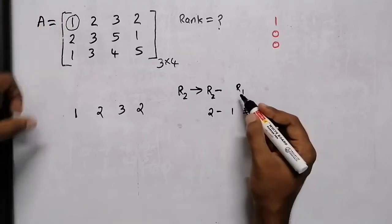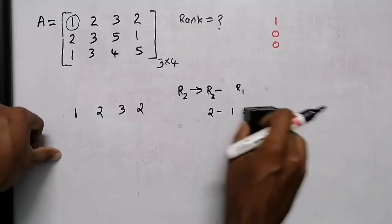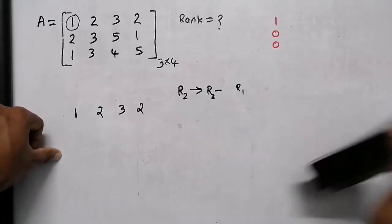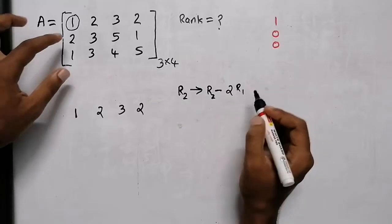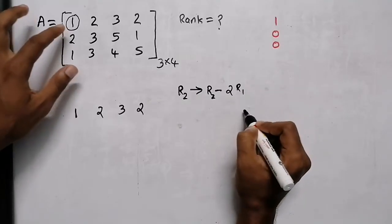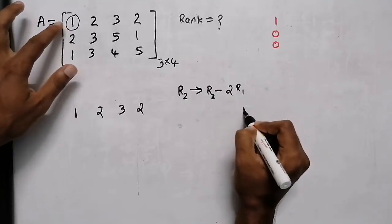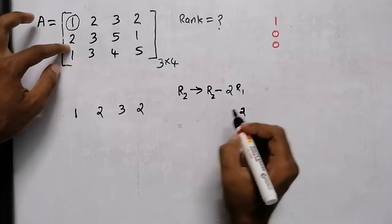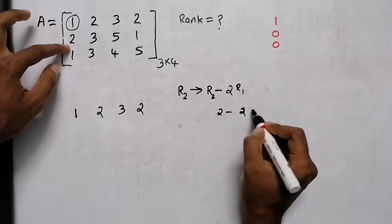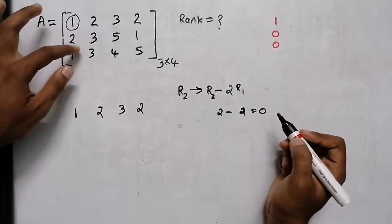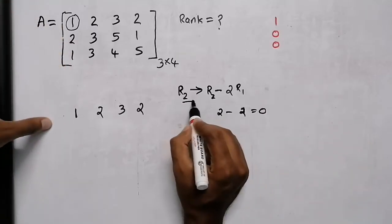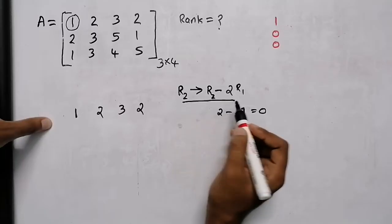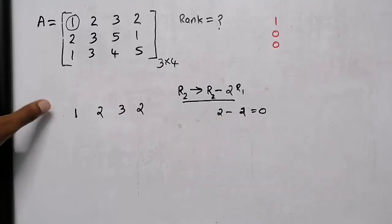I will do a second row: R2 minus R1. R2 is now 0. R2 is now 2, R1 is now 1, 2 minus 1 is now 0. Minus R1 is now 2. So, minus R1 is now 2. 2-2i is 0. So we have 0. So we have the row operation R2 minus 2R1.